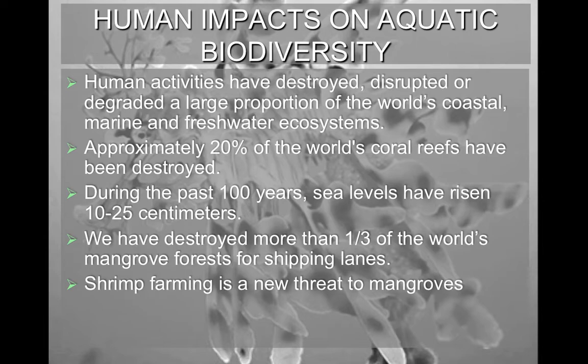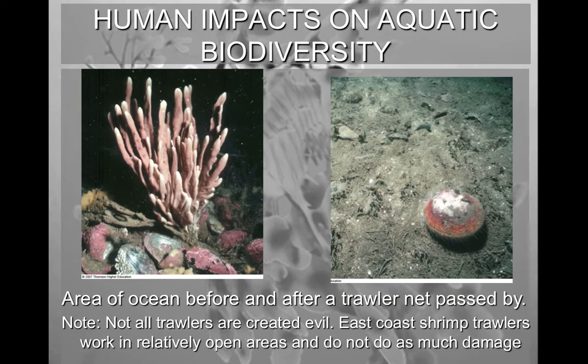Another threat to the mangrove forest includes shrimp farming and trawlers, which basically devastate the entire ocean floor. When a trawler net passes through, it removes everything — not just the shrimp but other things in the ecosystem — and leaves very little in its wake. Not all trawlers are created equal; East Coast shrimp trawlers work in open areas where there isn't much to damage in the first place, so they don't cause as much damage.